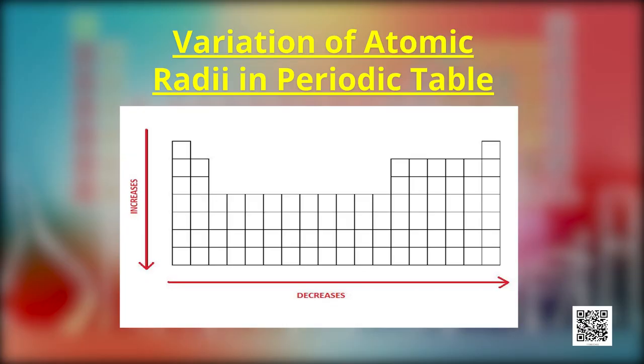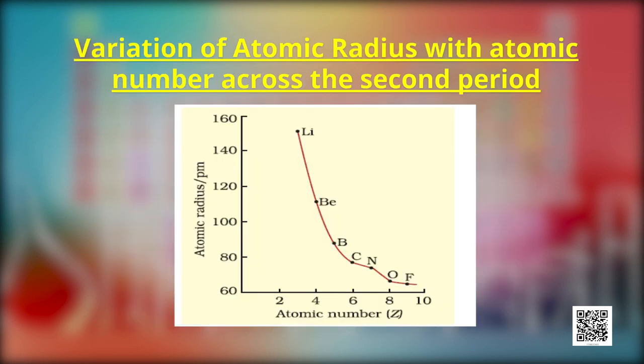How does the radius of an atom vary in a period and a group of the periodic table? Generally, atomic radius decreases across a period and increases as we go down a group. In a period, as we move left to right, the nuclear charge increases by one unit in each succeeding element while the number of shells remains the same. As a result, the effective nuclear charge increases and the electrons in the valence shell are more strongly attracted, making the atoms smaller and smaller.